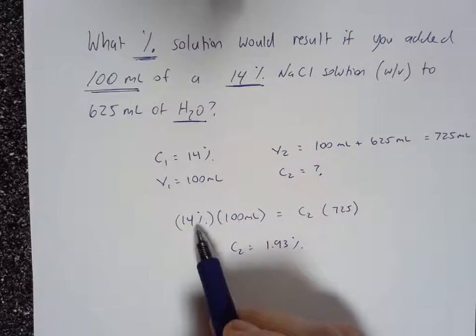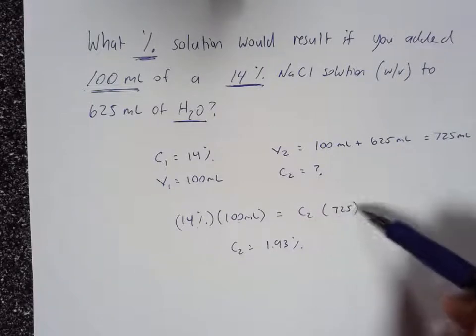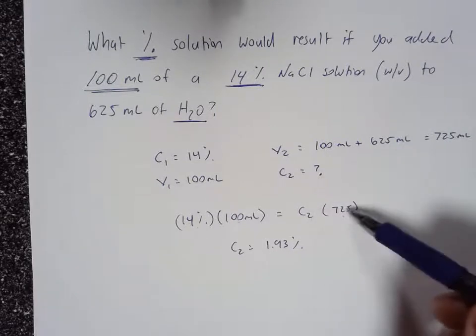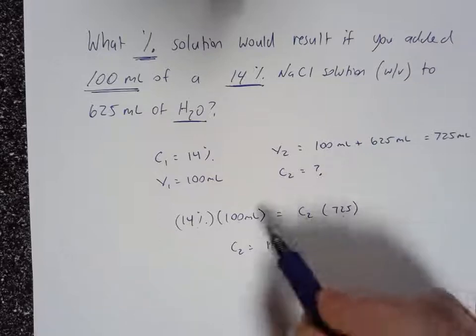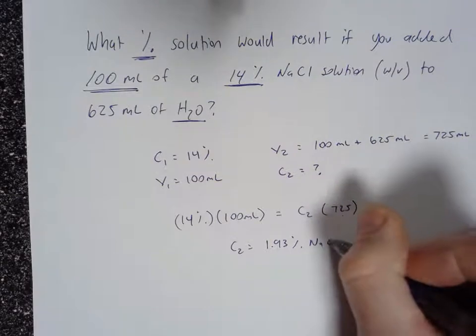So if you add 100 milliliters of 14% solution to 625 milliliters of water, you're going to end up with a total volume of 725. And the concentration of that new solution, that diluted solution, will be 1.93% sodium chloride.